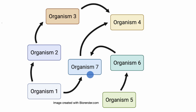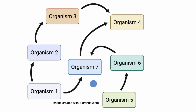What we have here is a diagram of a food web that shows us how matter and energy are transferred between organisms in an ecosystem, but it's a little bit abstract. They don't tell us what these organisms are — they just say organism one, organism two, organism three, and so forth.